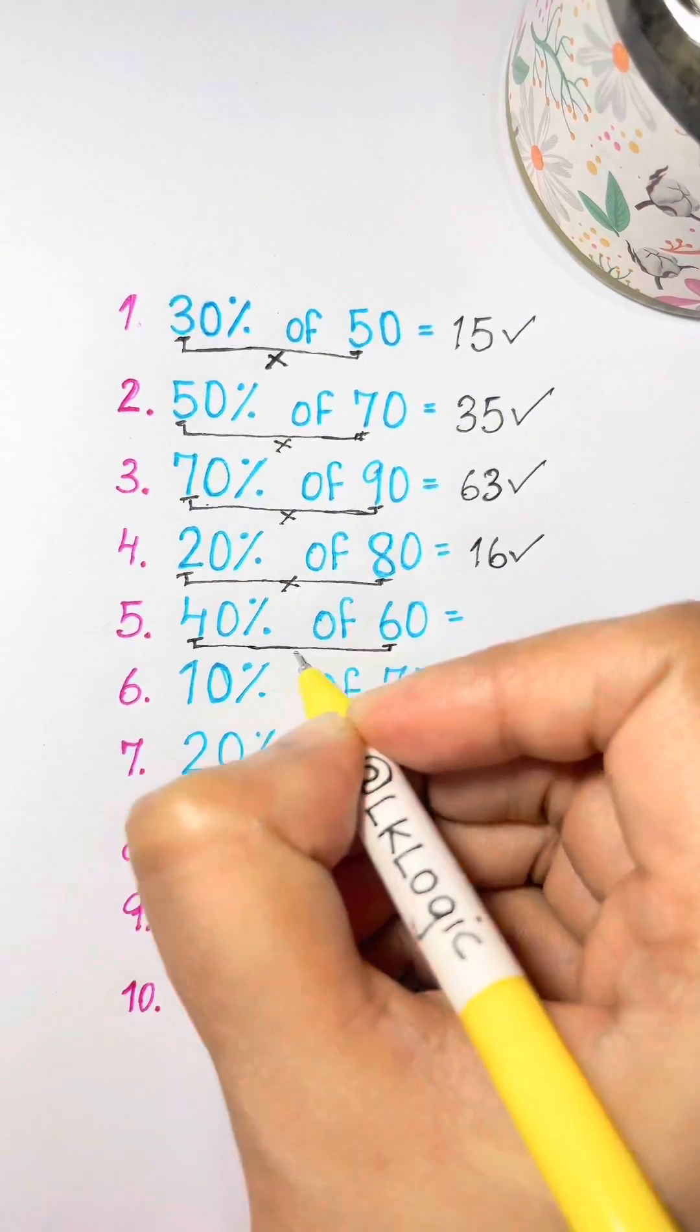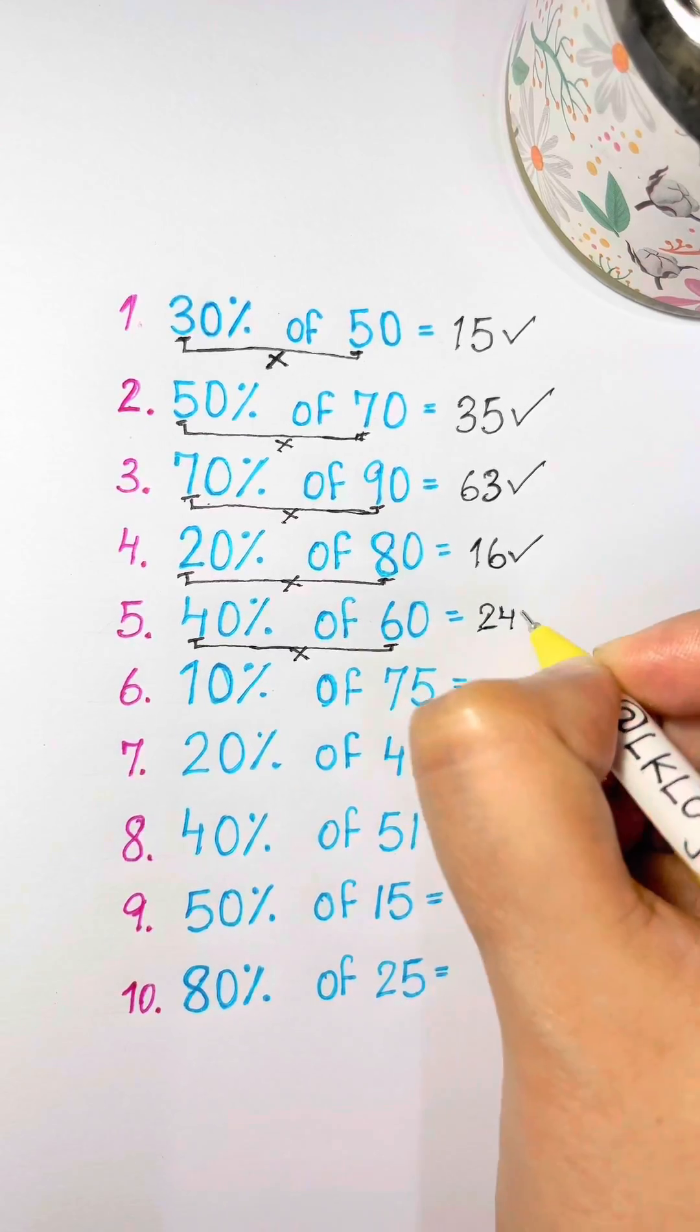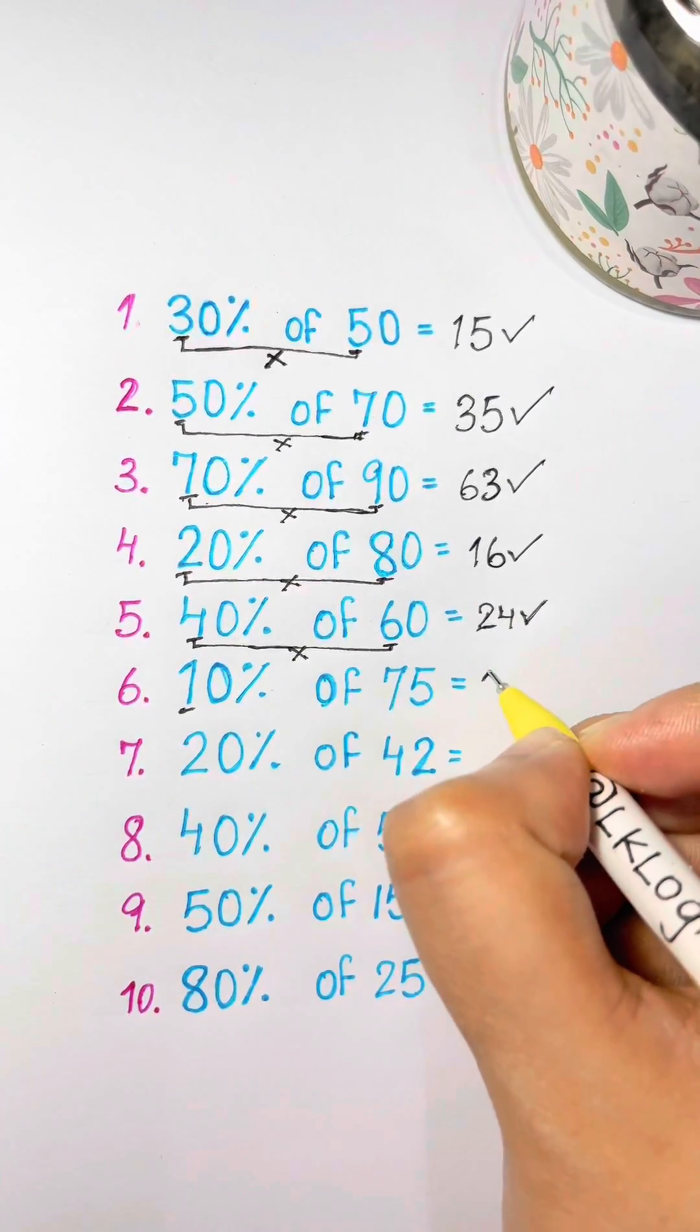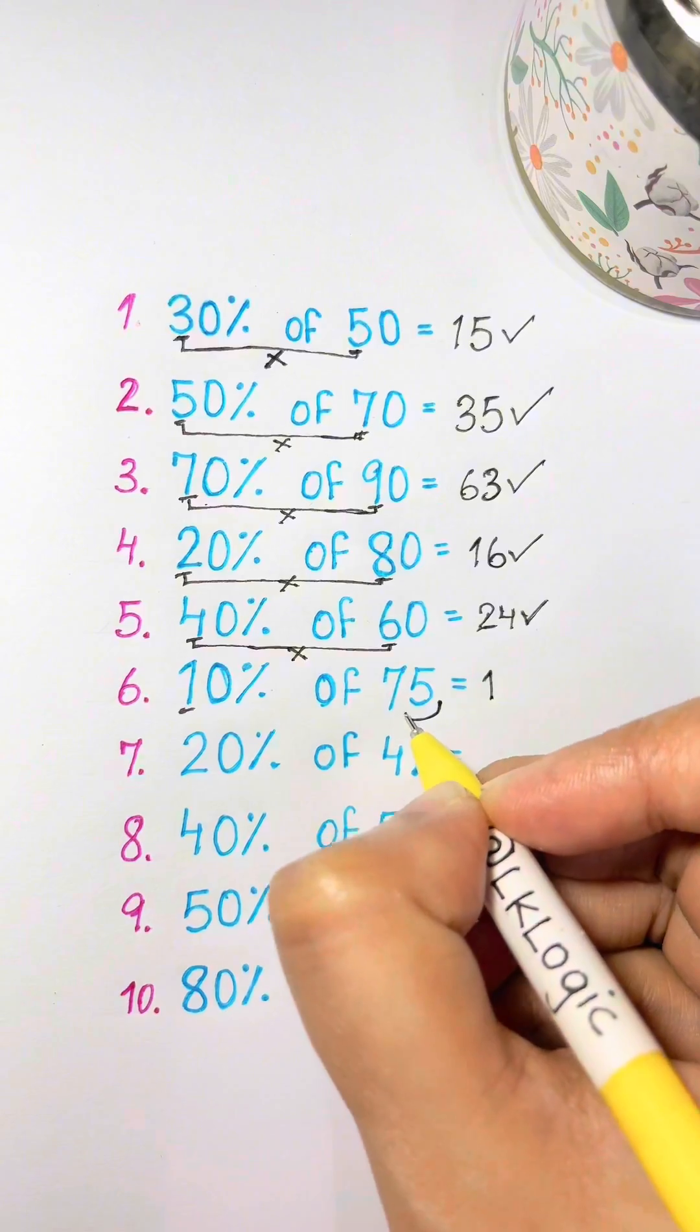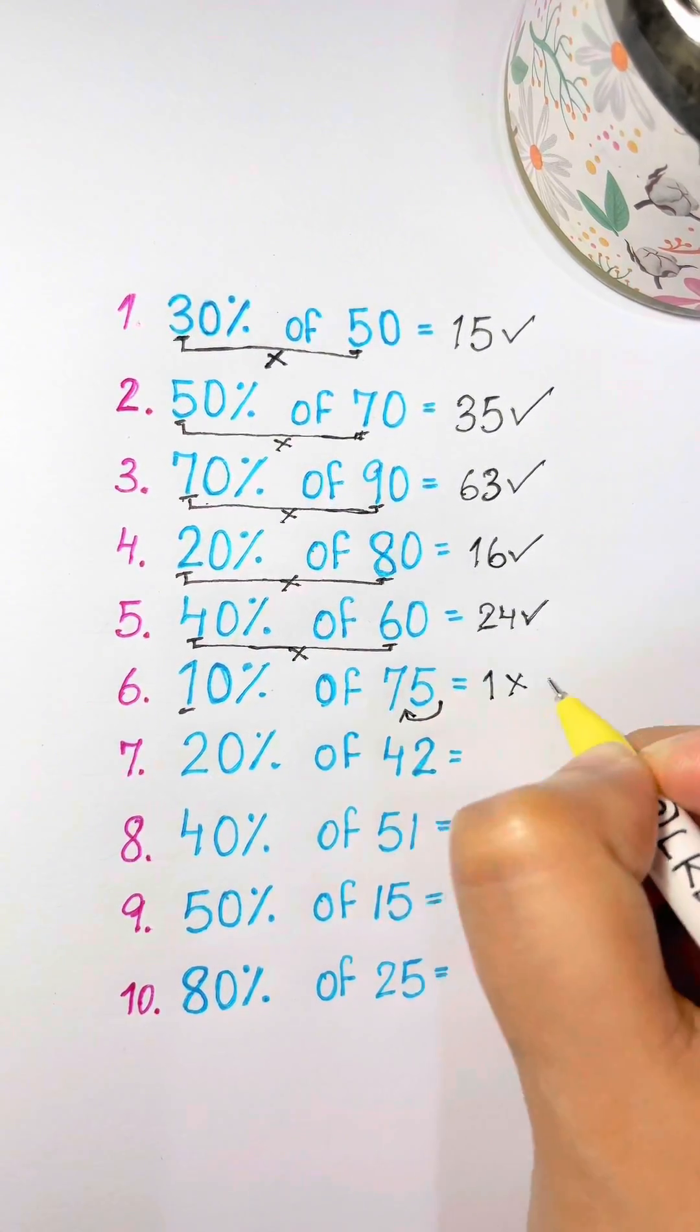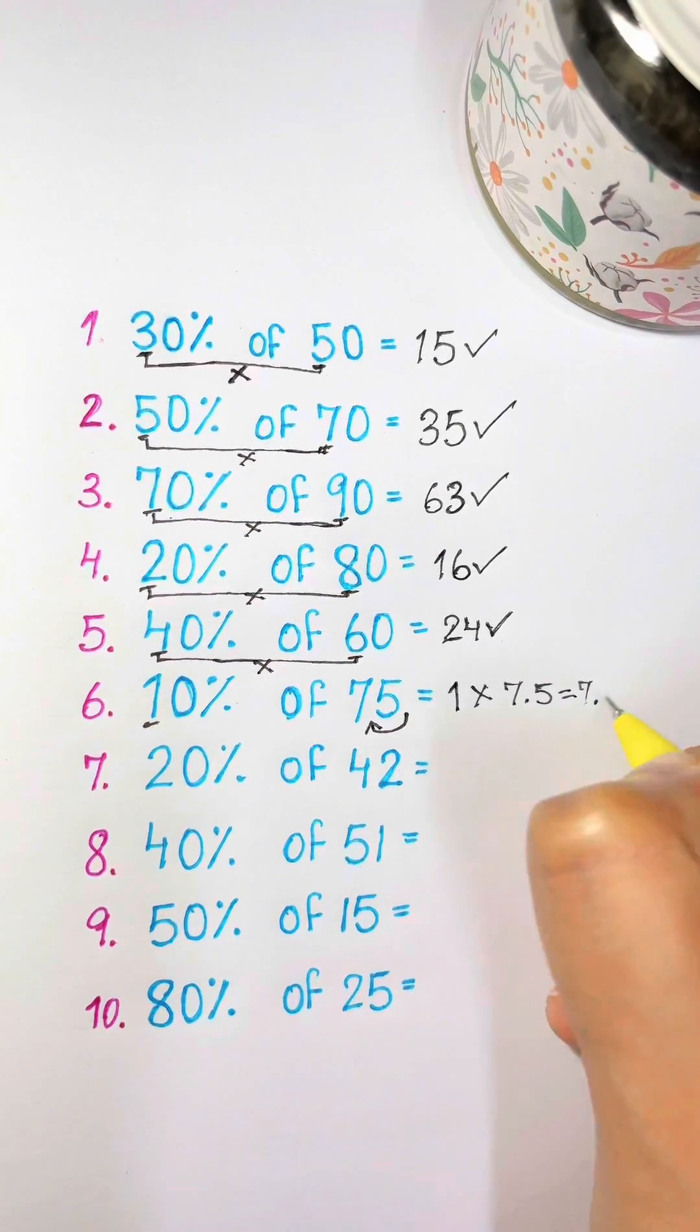What's 40% of 60? Just multiply 4 times 6 equals 24. What's 10% of 75? Write 1 and take the decimal one slot towards left. So 1 times 7.5 equals 7.5.